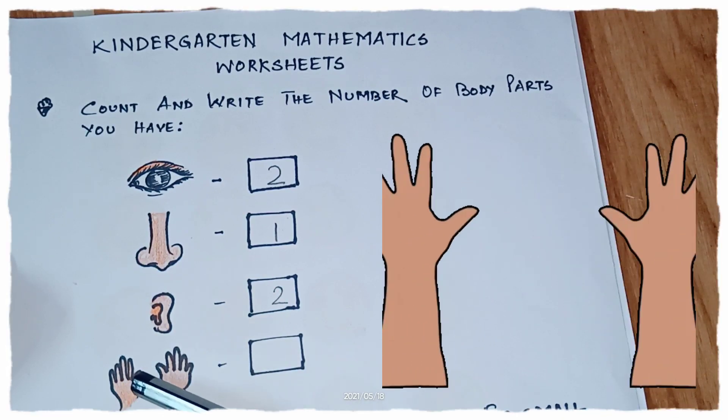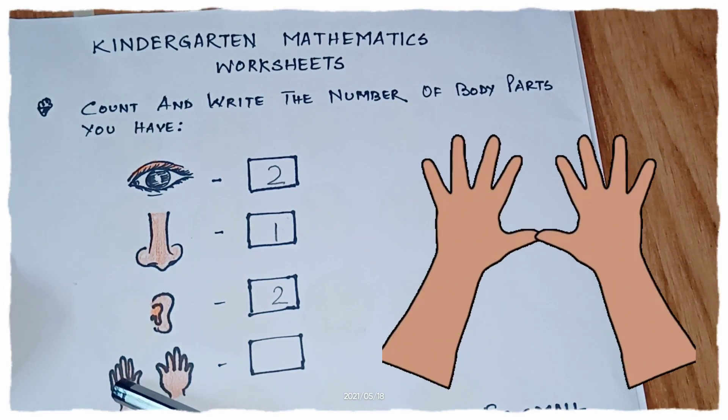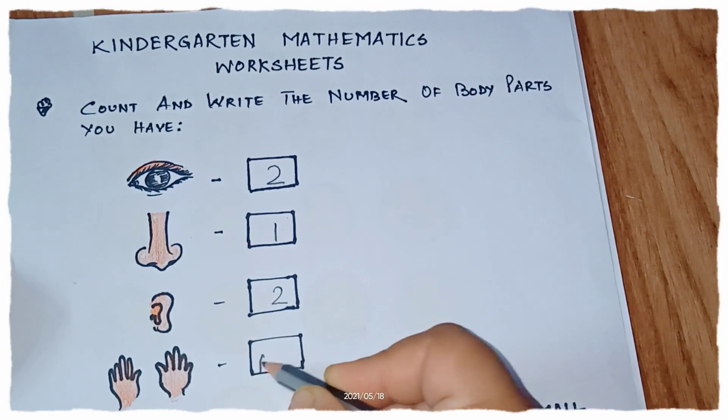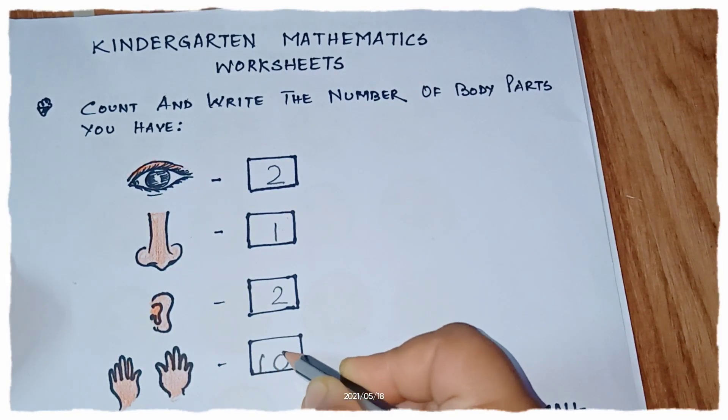Now these are our fingers guys. Let us count: 1, 2, 3, 4, 5 in 1 hand, 6, 7, 8, 9, 10 in both hands. So we are going to write here 1, 0... 10.